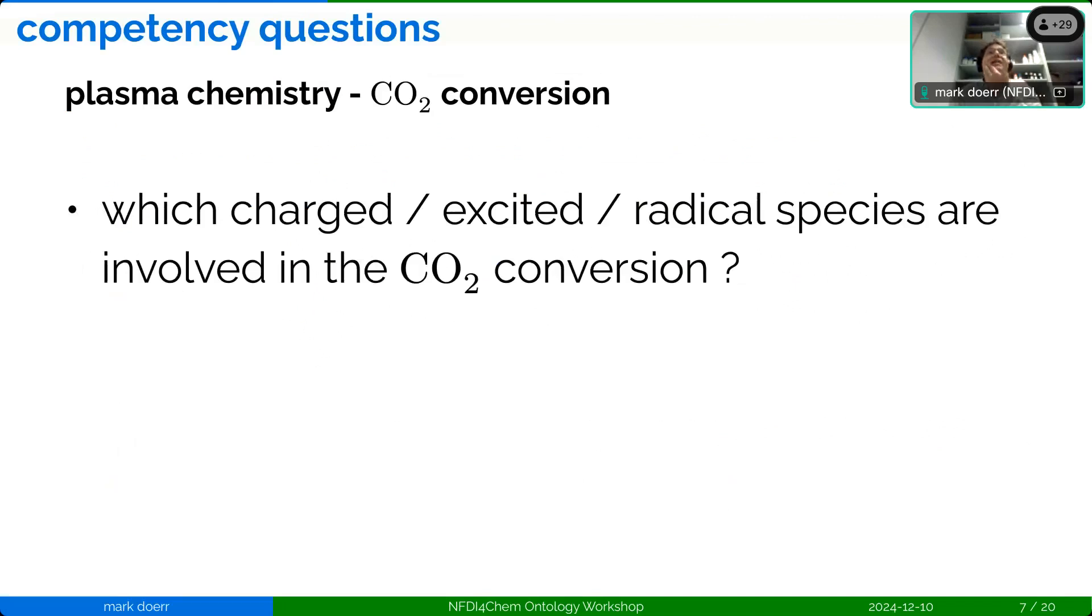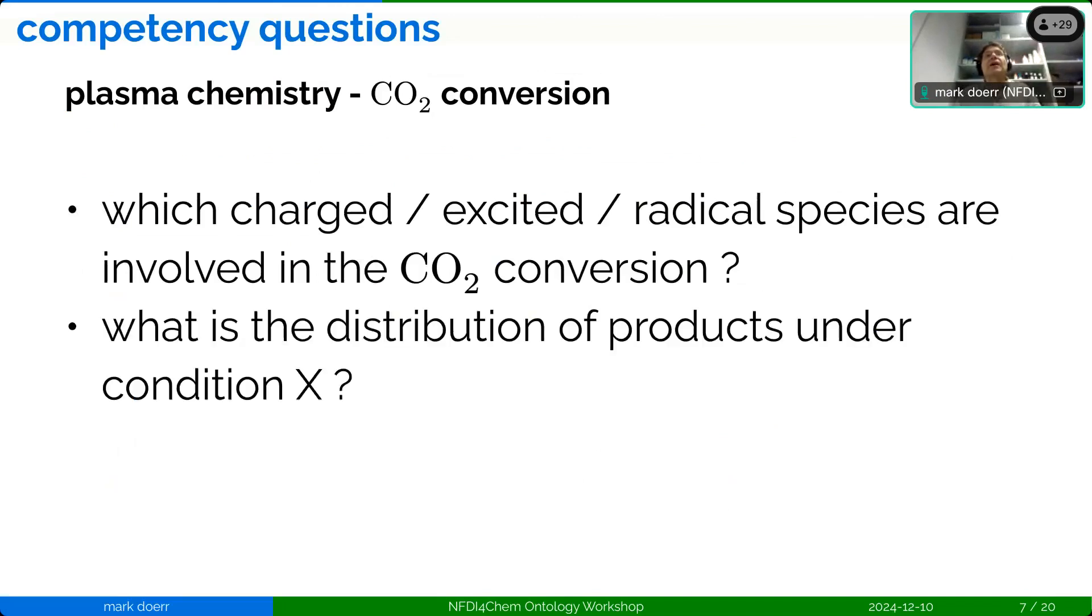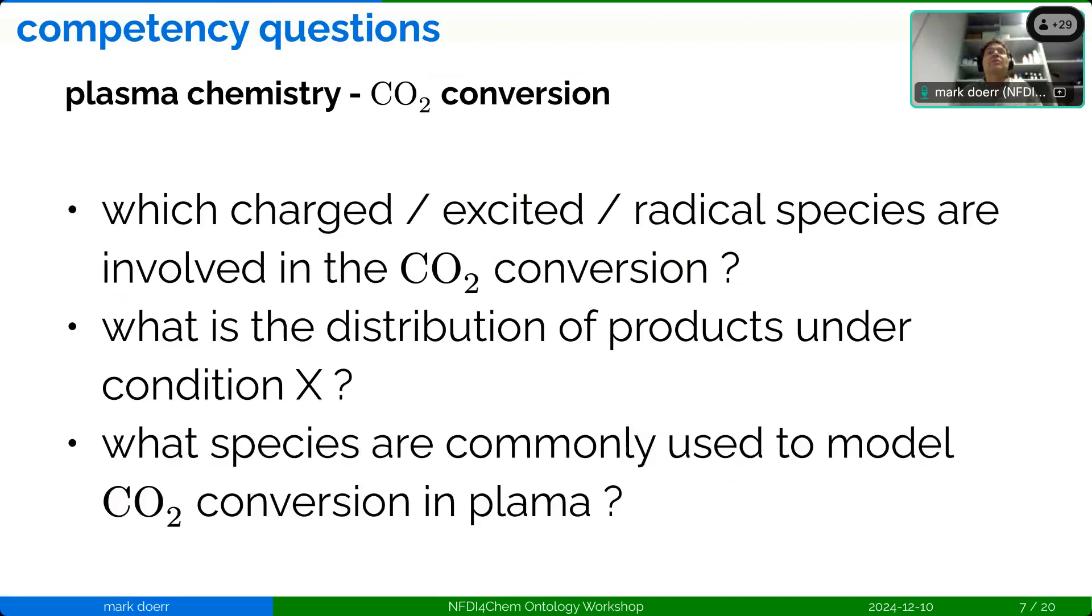Then you could ask in competency questions, asking the knowledge graphs which are charged excited states or radical species and which are involved in a certain reaction? What is the distribution of the products under certain conditions? Because you might change the plasma intensity, the composition of the plasma or the radiation, and then you get different product distributions. What are, for example, common species to model a certain reaction?